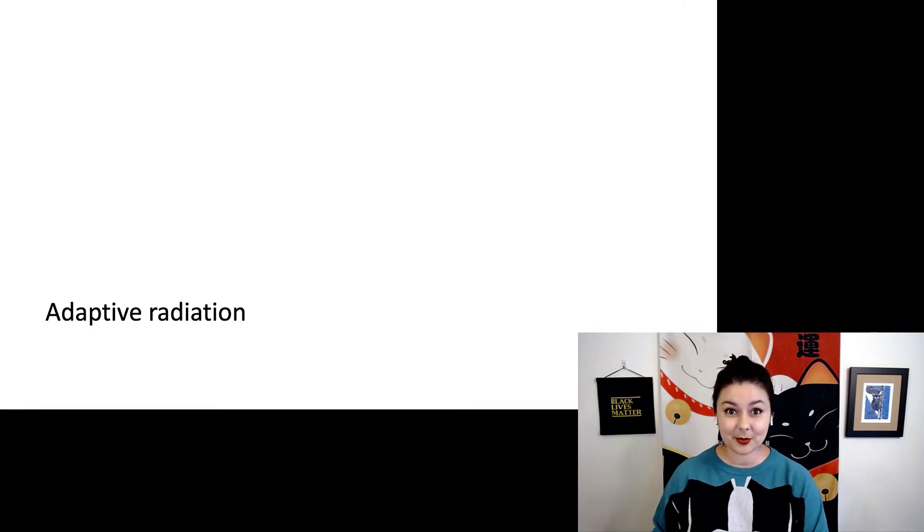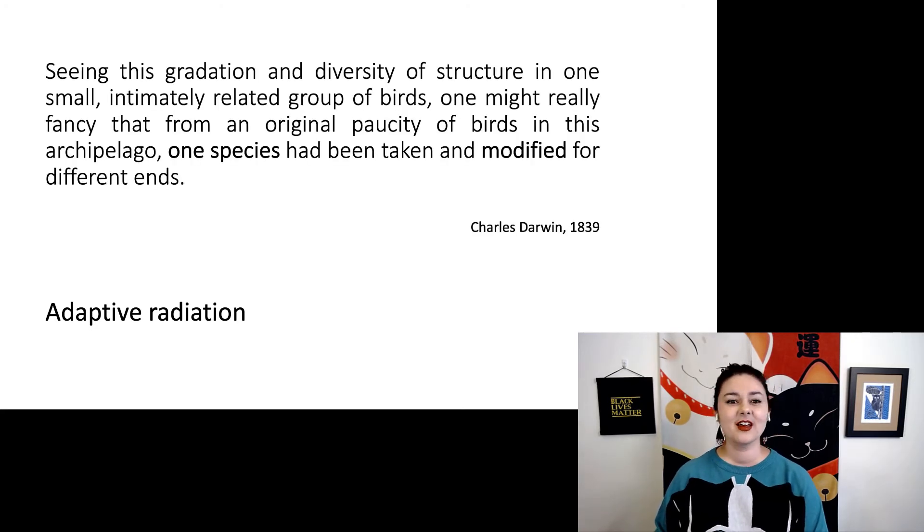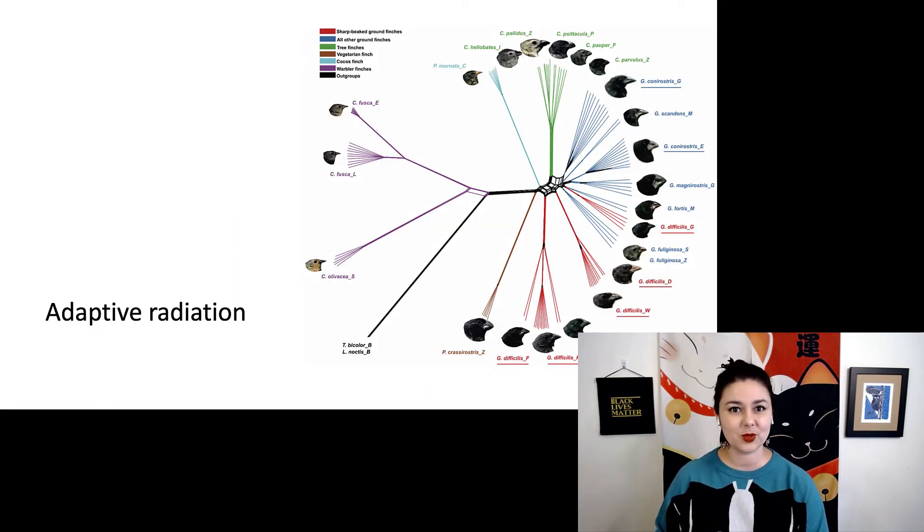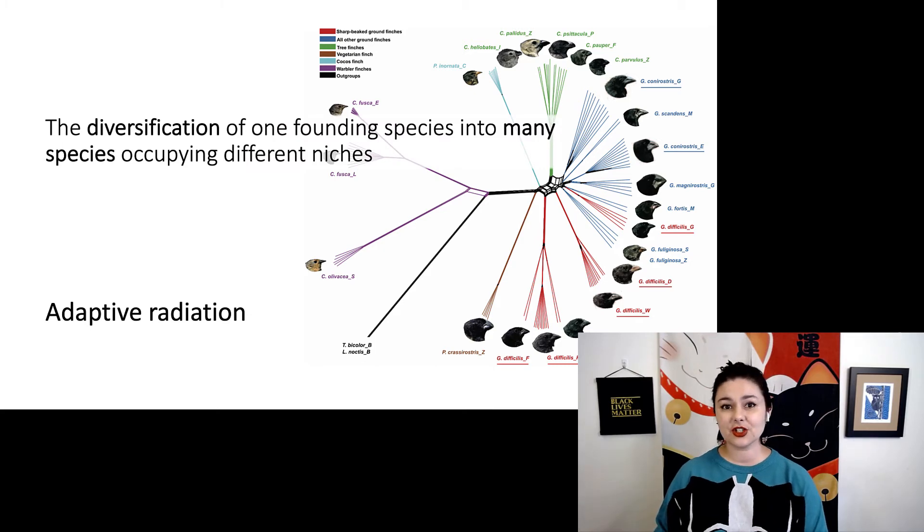Some specific examples of descent with modification can be called adaptive radiation. This is another term we get from Darwin. Seeing this gradation and diversity of structure in one small, intimately related group of birds, one might really fancy that from an original paucity of birds in this archipelago, one species had been taken and modified for different ends. Of course, here Darwin is describing the adaptive radiation he witnessed in the Galapagos finches. We have, of course, gone back and done more modern studies on them. And here is a tree of how we think these different species are related. And adaptive radiation is the word we use to describe the diversification from a single founding species into many different species, occupying different niches. We generally find this in islands or in other instances where a new environment forms, and nothing has evolved there yet.